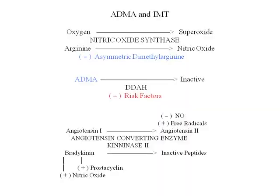All the risk factors that cause cardiovascular disease — smoking, diabetes, hyperlipidemia, homocysteine — work by blocking the activity of DDAH, the enzyme that breaks down ADMA. All the risk factors, as a final common pathway, keep you from breaking down ADMA. The more risk factors you have, the more ADMA you have, the lower will be your arginine-to-ADMA ratio, and the less nitric oxide you'll make.